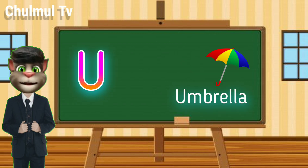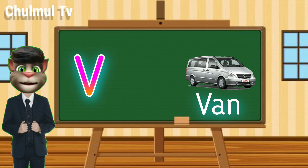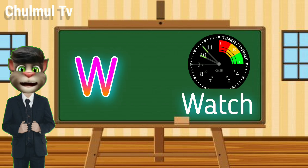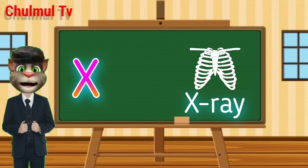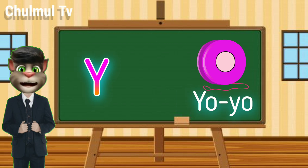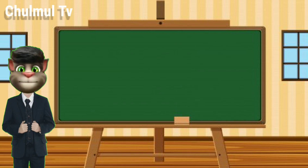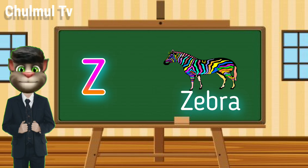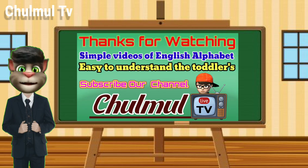U for umbrella, V for van, W for watch, X for X-ray, Y for Yoyo, Z for zebra. All videos of English alphabet.